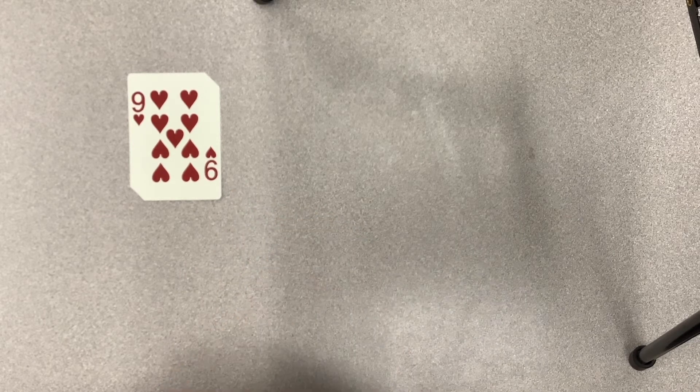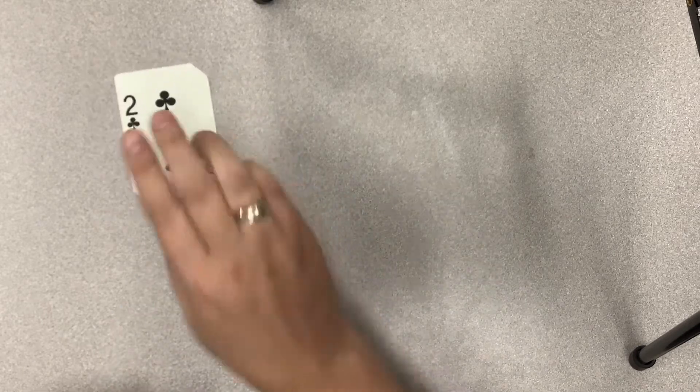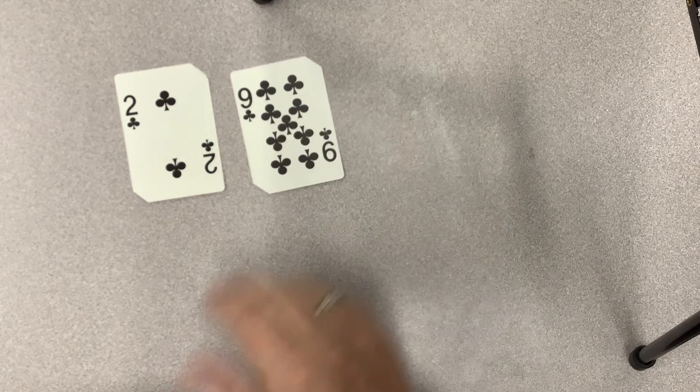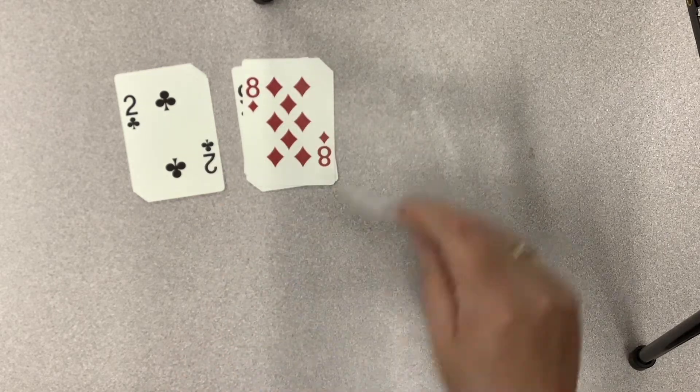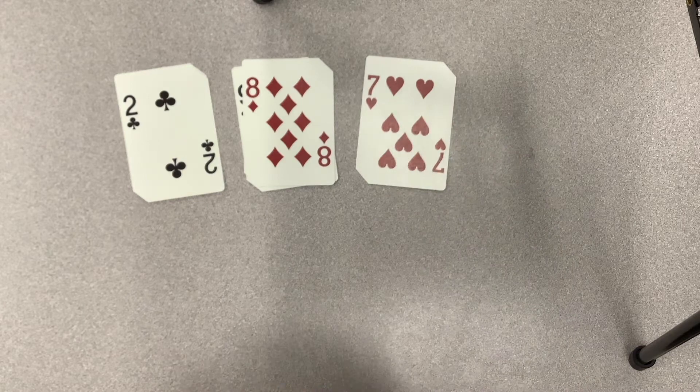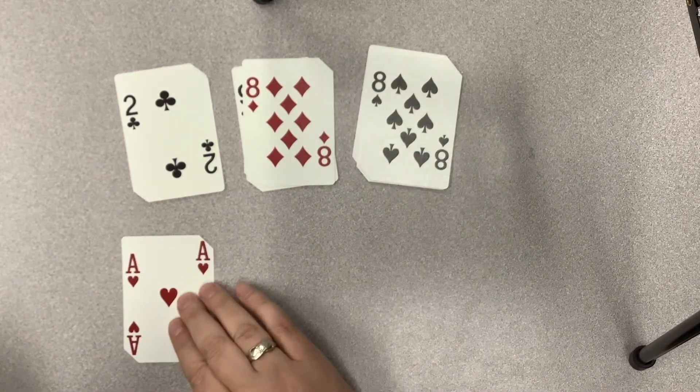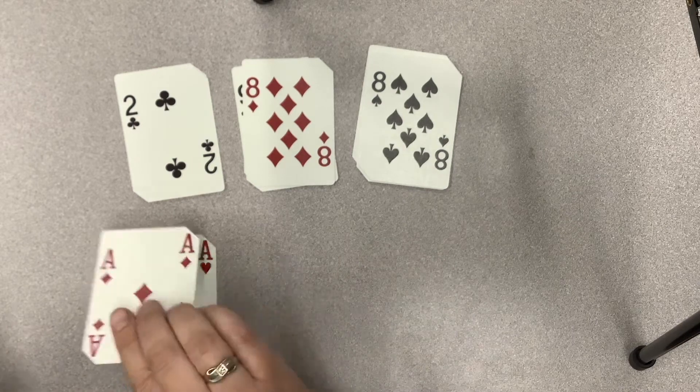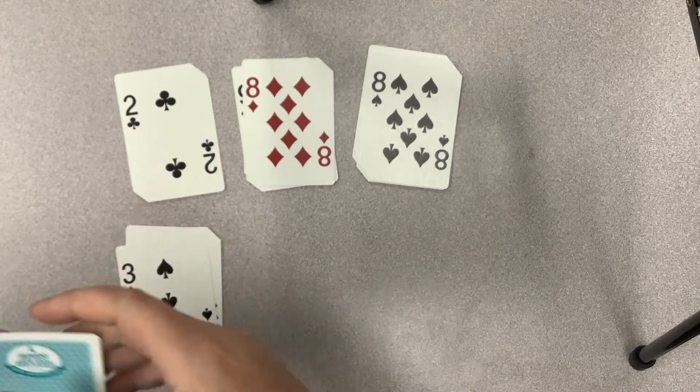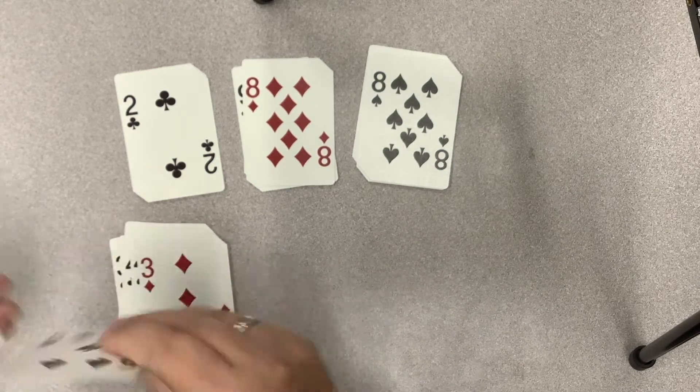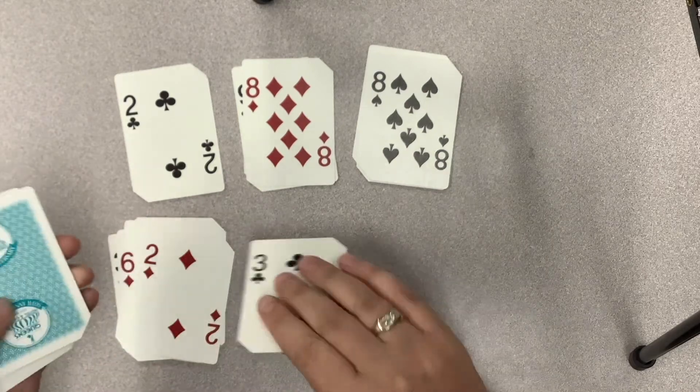Then you start another pile: nine, ten, I'm done. Seven, eight, nine, ten. Ace is a one so that's one, two, three, four, five, six, seven, eight, nine, ten. Three, four, five, six, seven, eight, nine, ten.